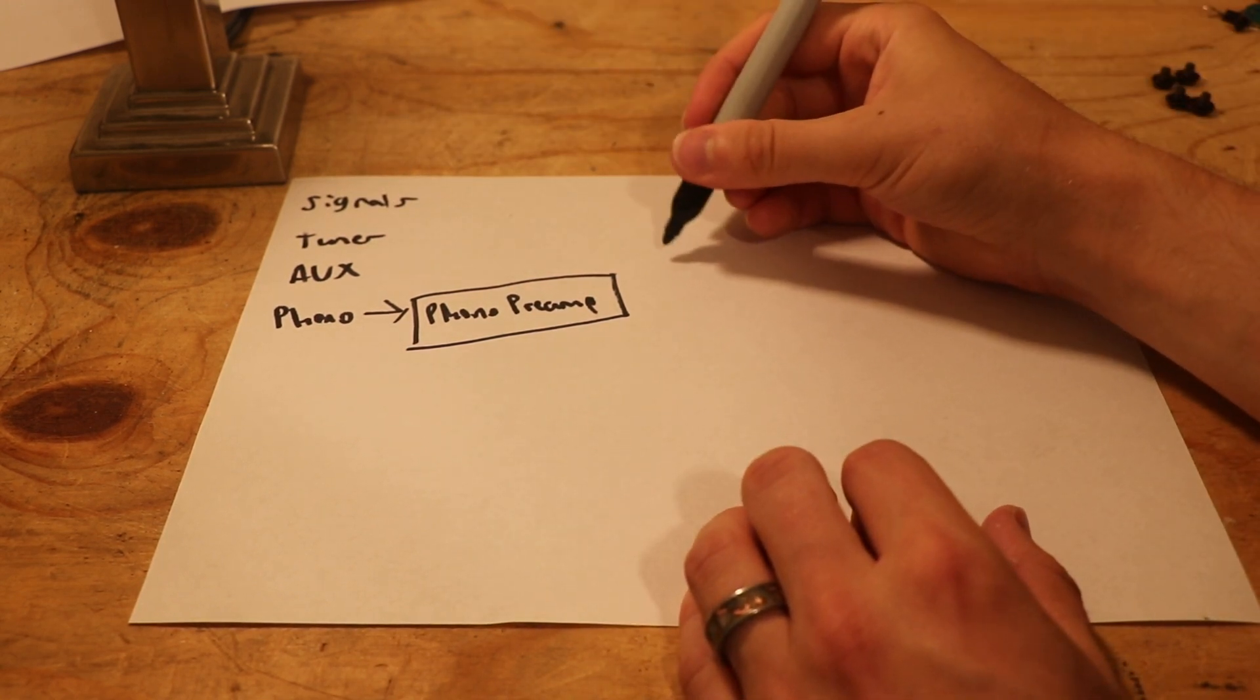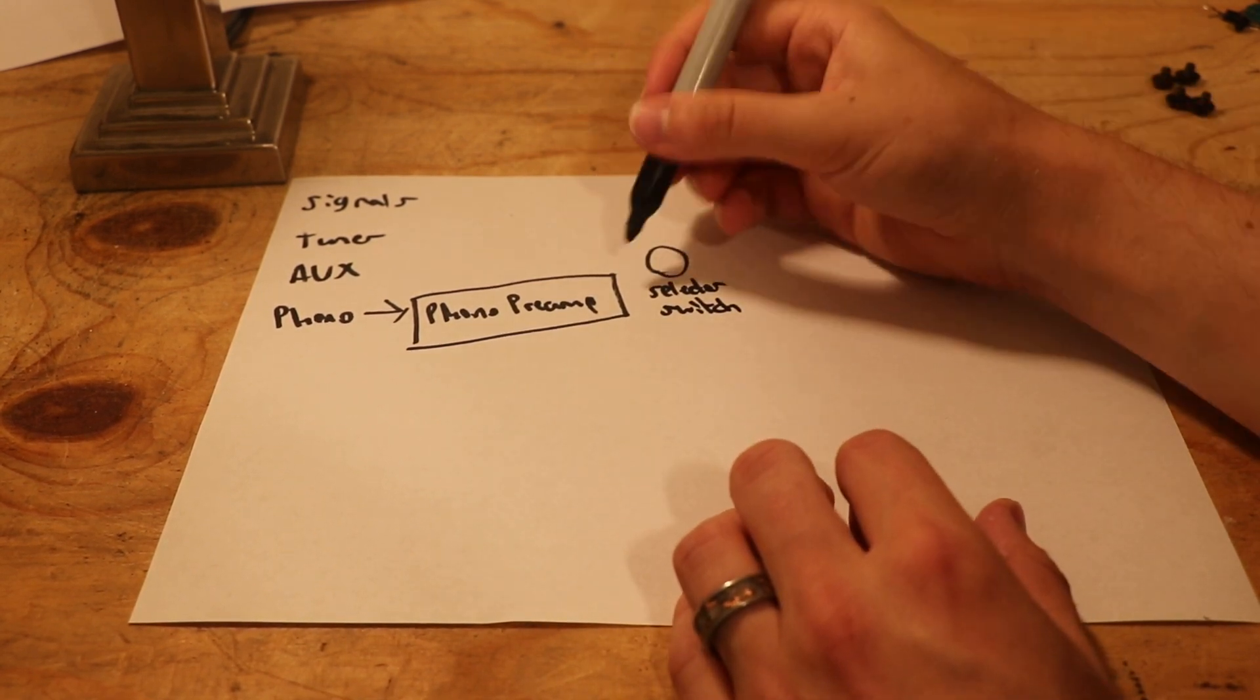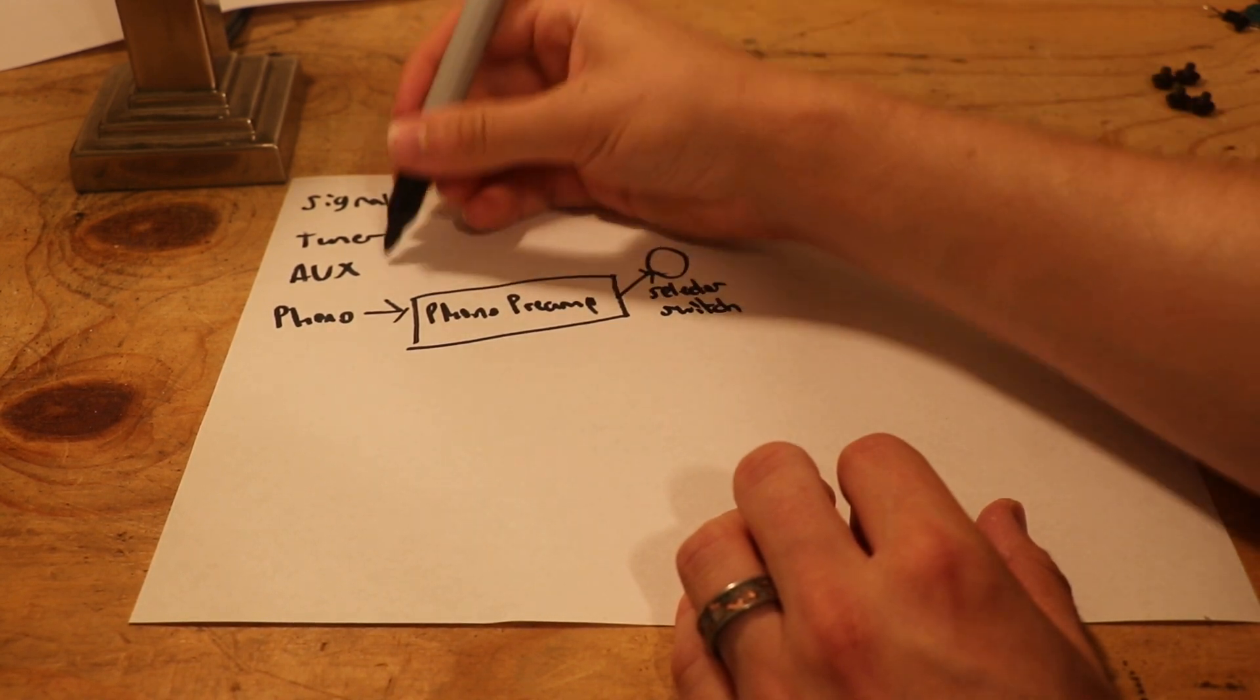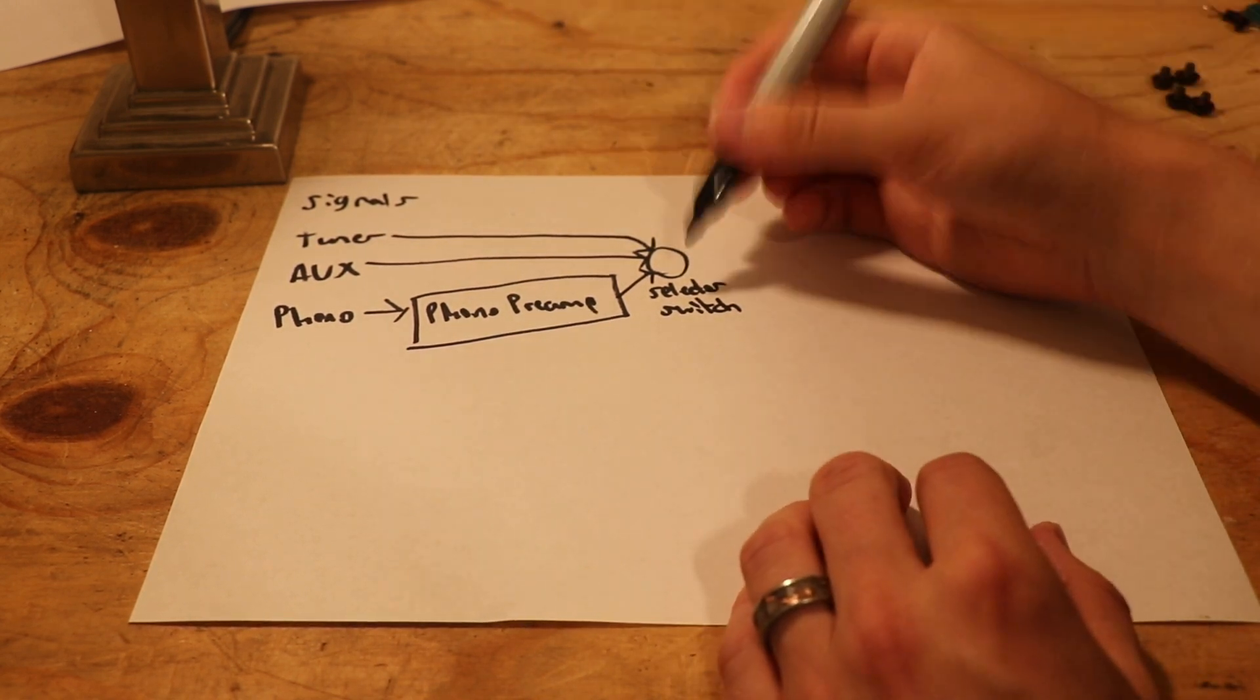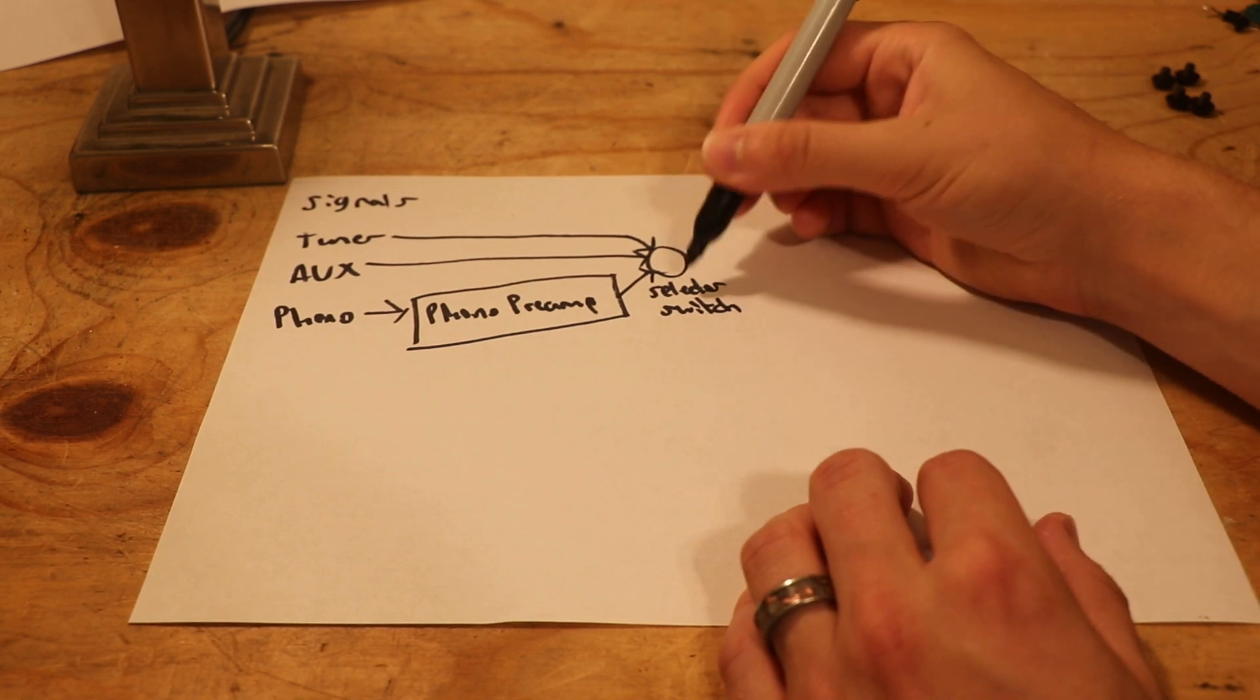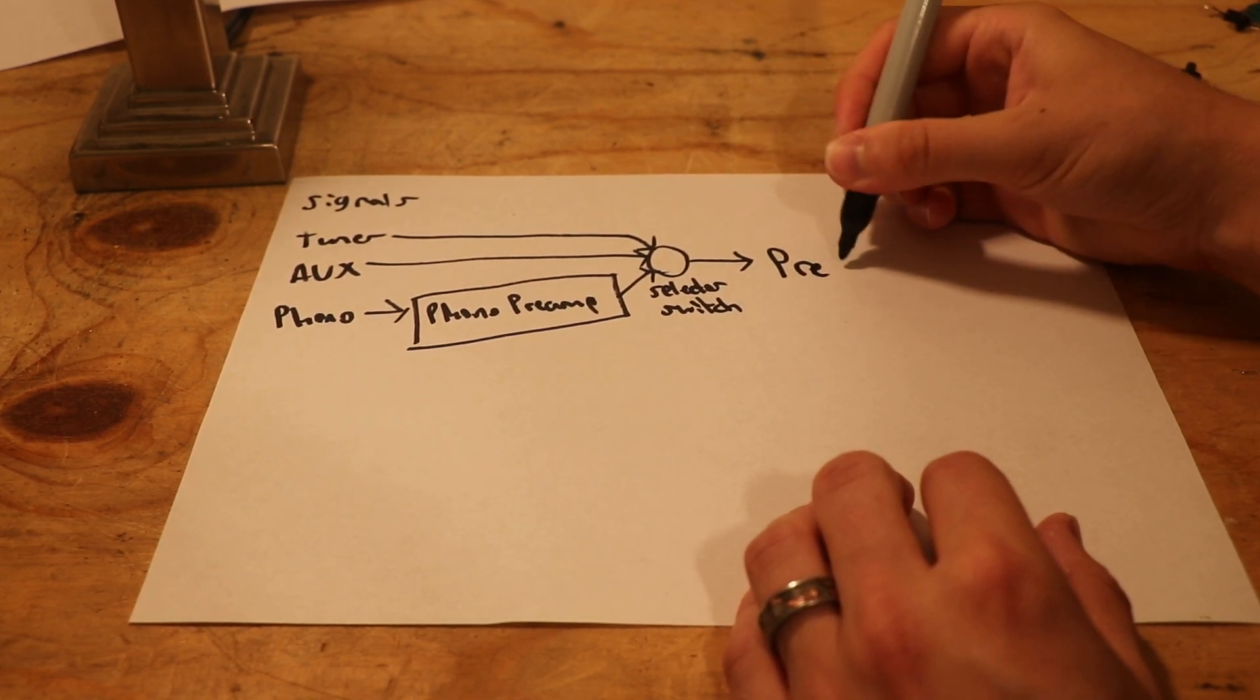And then, what we have is a switch called the selector switch. What's going on here is we have everything coming from the inputs going into this switch, and you get to choose what you want to come through your selector switch. What you choose goes to the preamplifier.